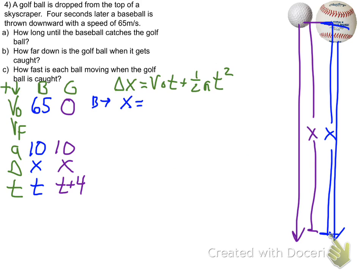We set that up for the baseball. V0 is 65. The time we use T. For acceleration it's 10. And for time it's T again. And it's T squared.